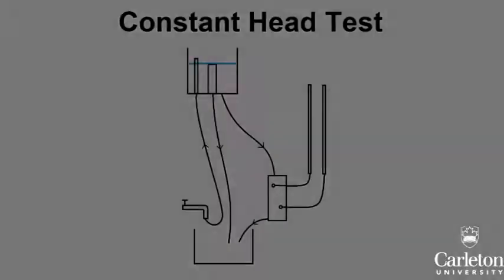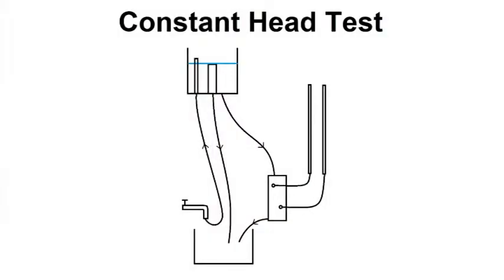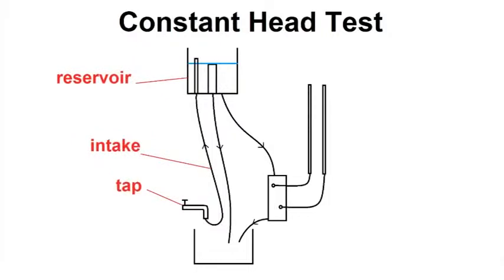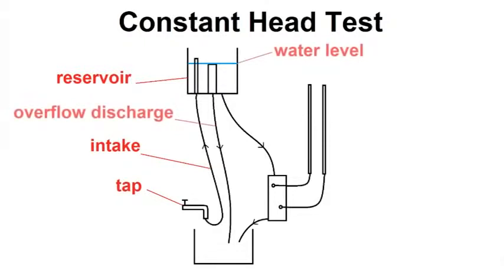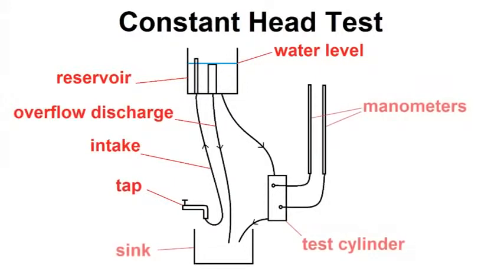This is the apparatus for the constant head test. Connected to this reservoir are three lines: an intake, which is connected to a tap and will keep filling the reservoir; a discharge line, which will take extra water out of the reservoir and keep the water level constant; and a line with a valve which connects to the test cylinder.